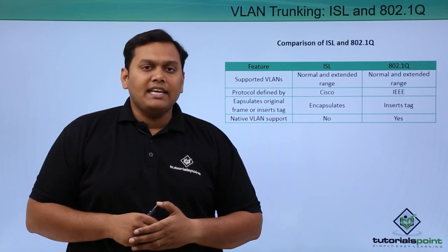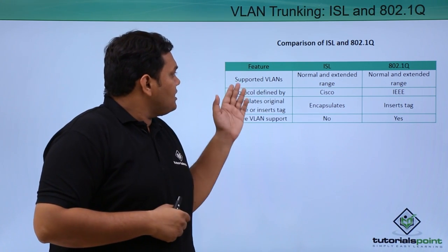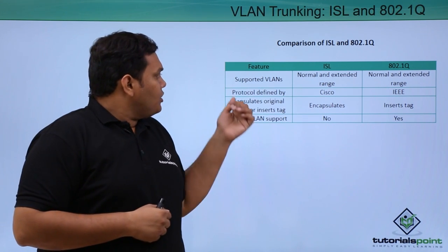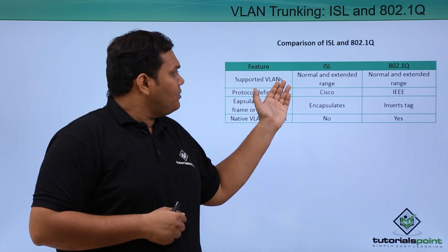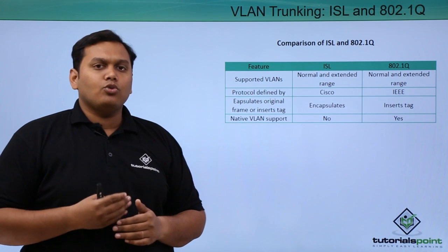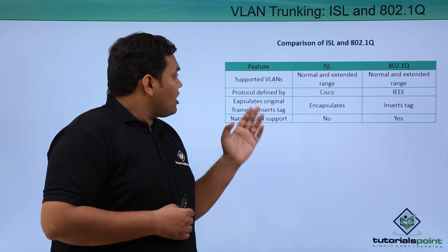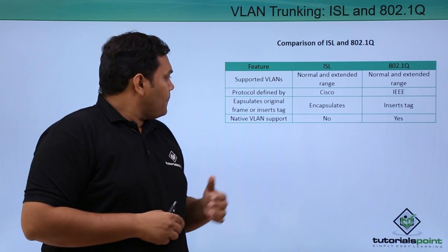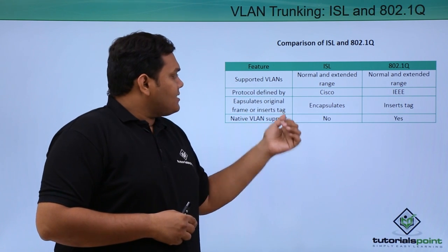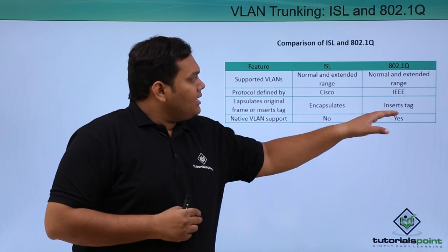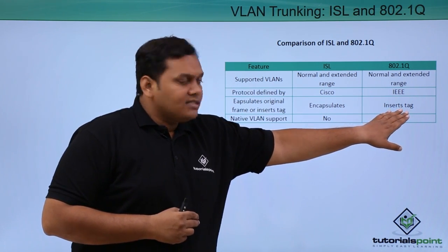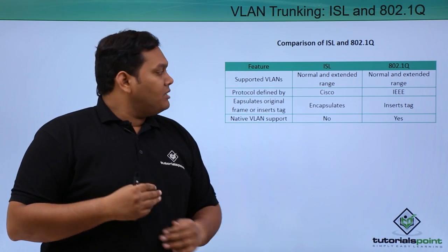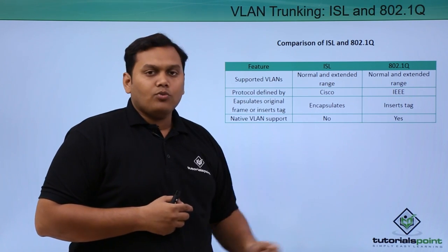Comparing ISL and IEEE 802.1Q: both support normal and extended range VLANs. ISL is defined by Cisco, while 802.1Q is defined by IEEE. For encapsulation, ISL encapsulates the entire frame, whereas IEEE 802.1Q inserts a tag — frame tagging occurs in 802.1Q. Regarding native VLAN support, ISL does not support native VLAN, but 802.1Q does support native VLAN.